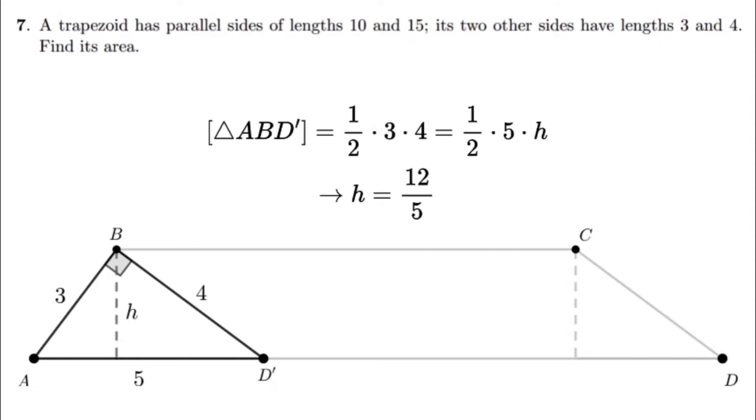The area of triangle ABD prime equals one half times the product of the legs—that's one half times 3 times 4. Furthermore, the area of the triangle is also one half base times height—that's one half times 5 times H. If we look at the equation, we can solve for the value of H. With just a bit of algebra, we find that the value of H is 12 over 5. Now we've found the height of ABD prime, which means we've also found the height of the entire trapezoid.